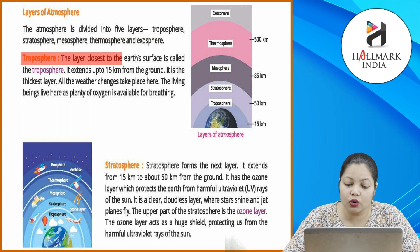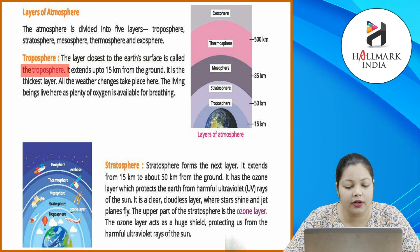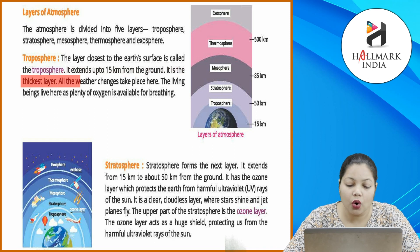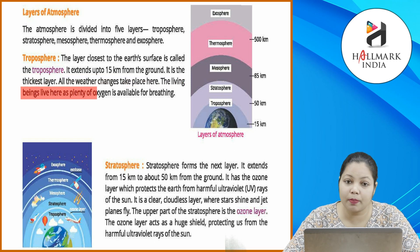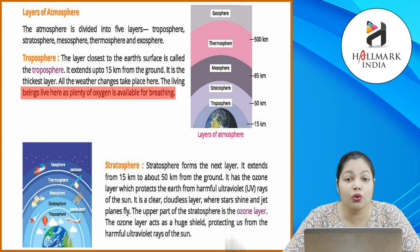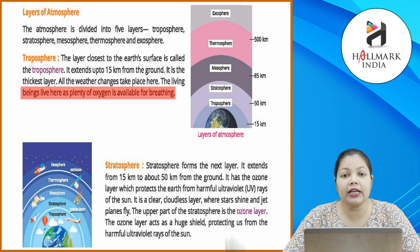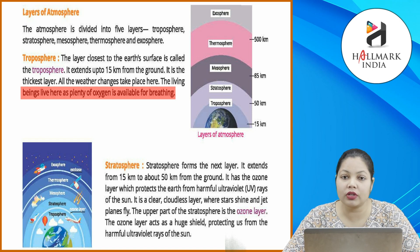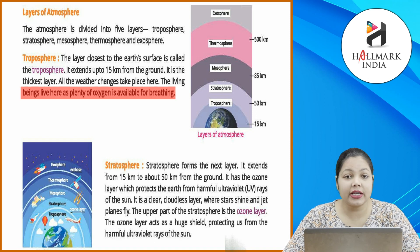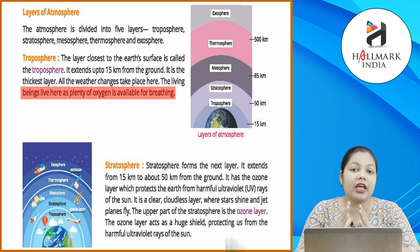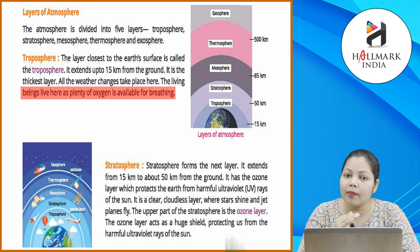Troposphere: the layer closest to the earth's surface is called the troposphere. It extends up to 15 km from the ground and is the thickest layer. All the weather changes take place here. Living beings live here as plenty of oxygen is available for breathing. Troposphere sabse closest layer hai jo earth pe hai — 15 km tak. Most of the living beings rahte hain kyunki yahan sabse zyada oxygen payi jati hai. Jaise-jaise layers upper side mein badhti jaati hain, oxygen level kam hota jaata hai.